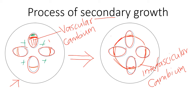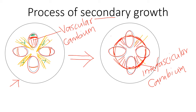In between the vascular bundles, parenchymatous tissue is present and medullary rays are present. But as you see, with the development of this interfascicular cambium, this cambium starts development of xylem inside — everywhere — and on the other side it starts development of phloem outside. This process goes on throughout the life of the plant. This is actually secondary growth.